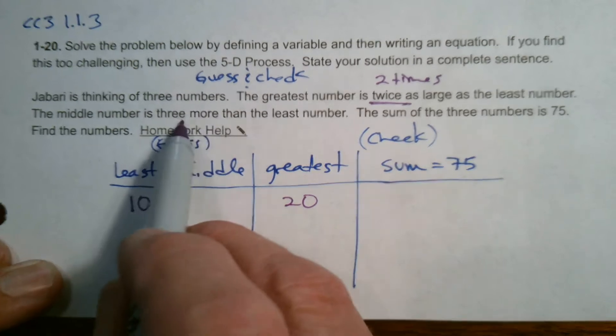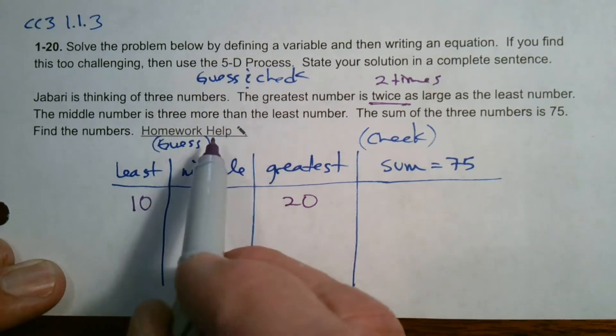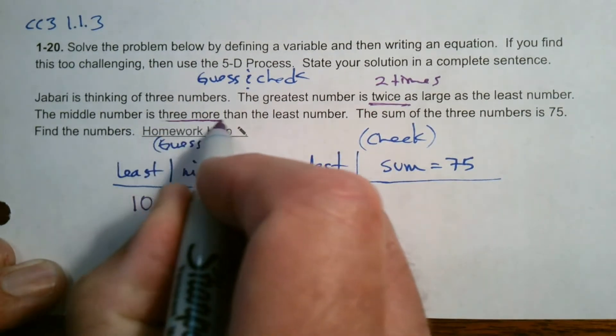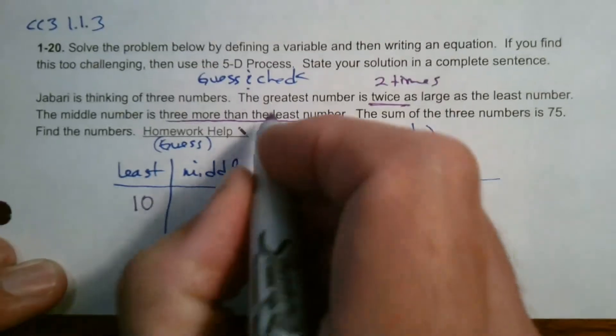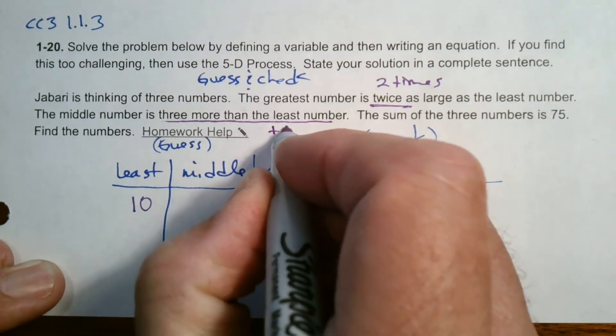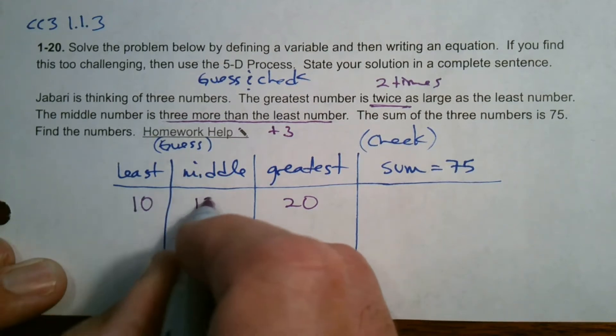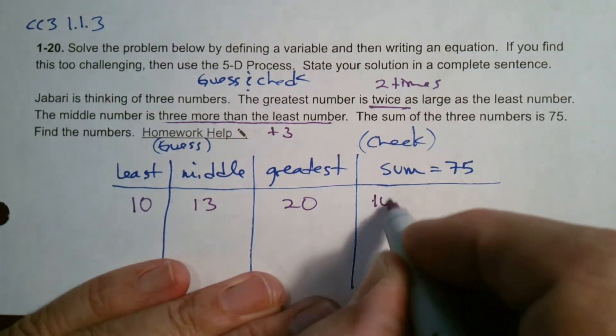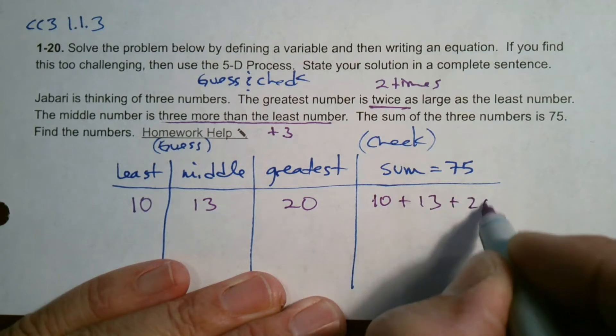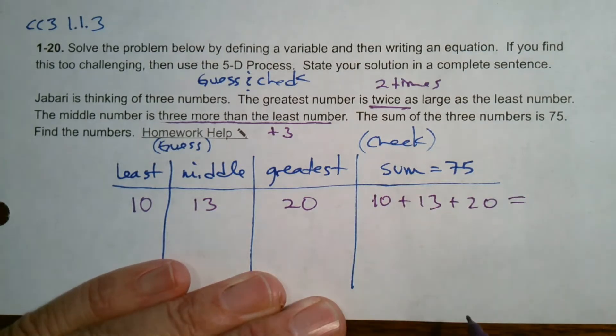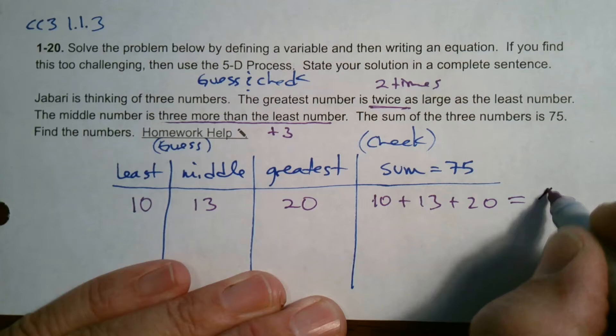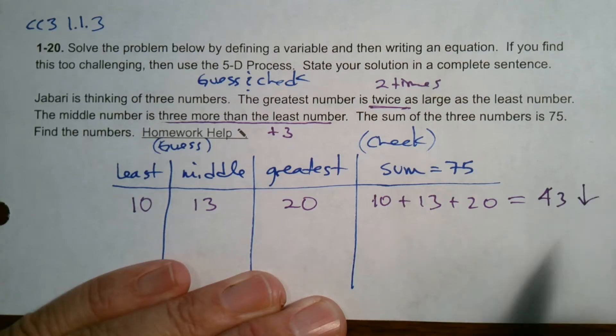The middle number is three more than the least number, so that's 10 plus 3, which is 13. Now the sum: 10 plus 13 plus 20 equals 43. That's too low.